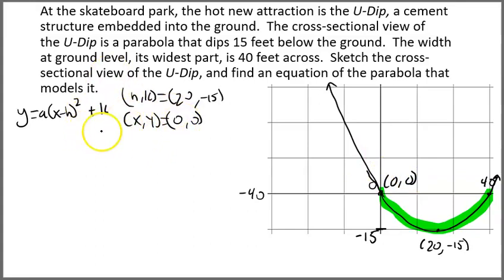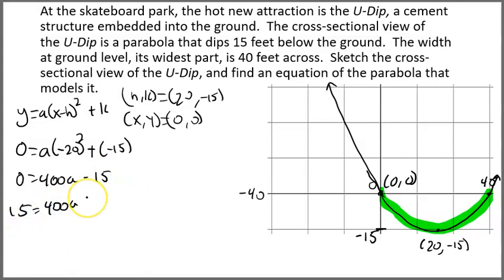I'm going to plug in this all for A again. So I get 0 equals A times, I'm going to use my head. X minus H. So H is 20. So 0 minus 20 is negative 20 squared. And then K is negative 15. So I get 0 equals, well, negative 20 squared is 400. That's minus 15. So I'm going to add the 15. I'm going to divide 15 by 400. So 15 divided by 400 reduces to be 3 over 80.